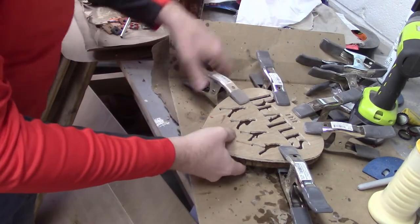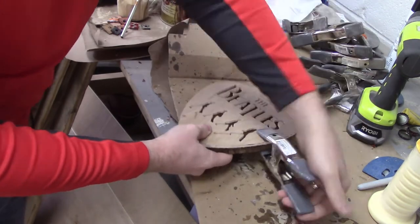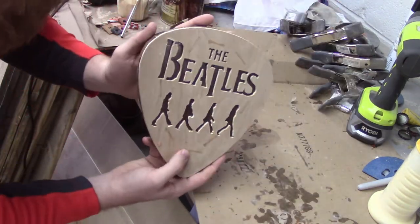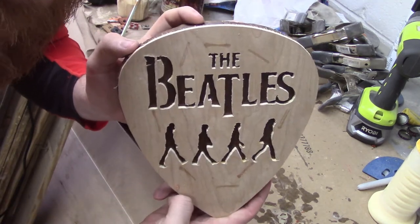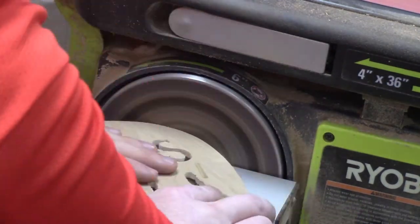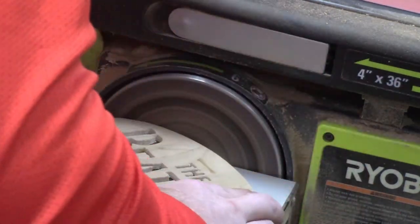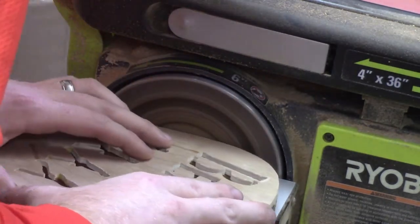And just to make sure that the top piece lines up with the backer piece, I sand down to the final shape one more time. This is done on the disc sander. I really need to replace that sanding disc.